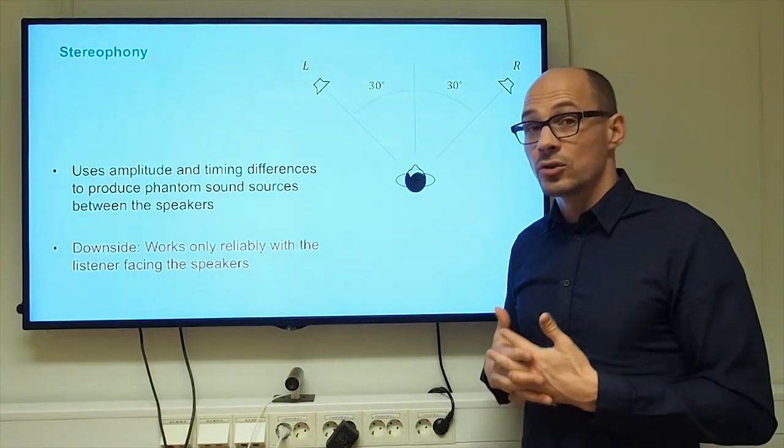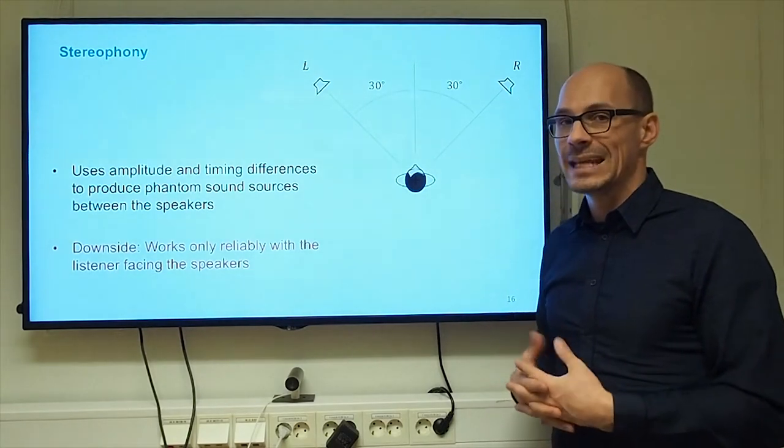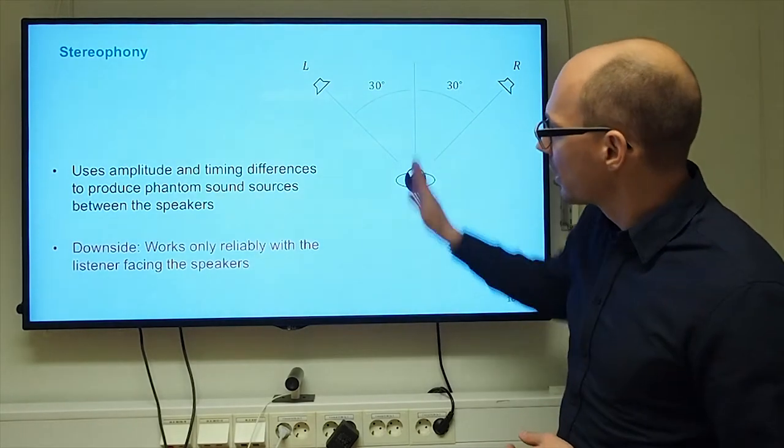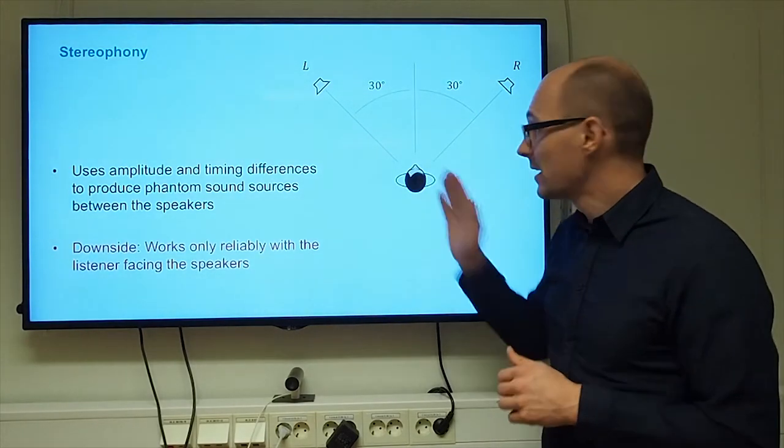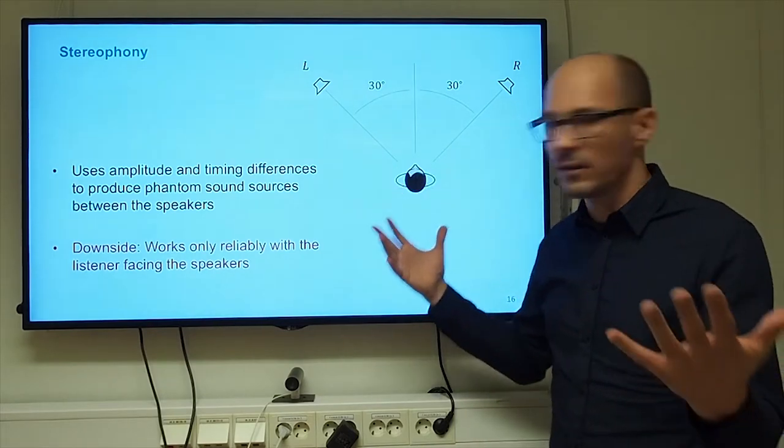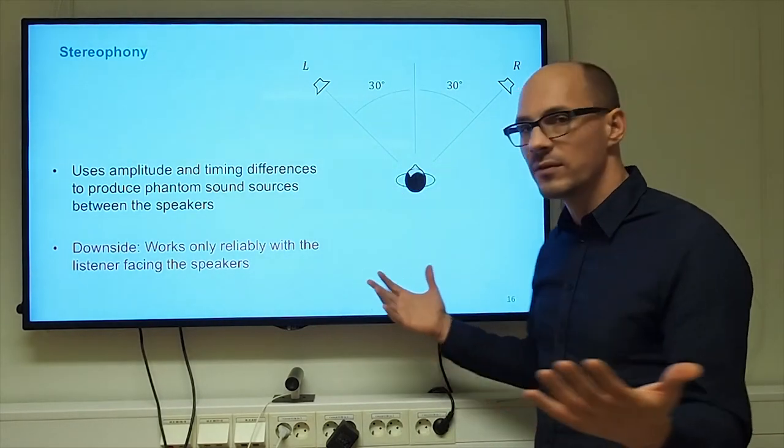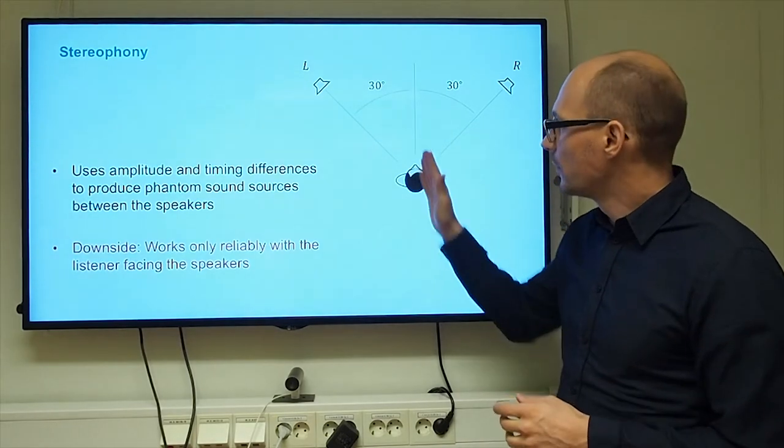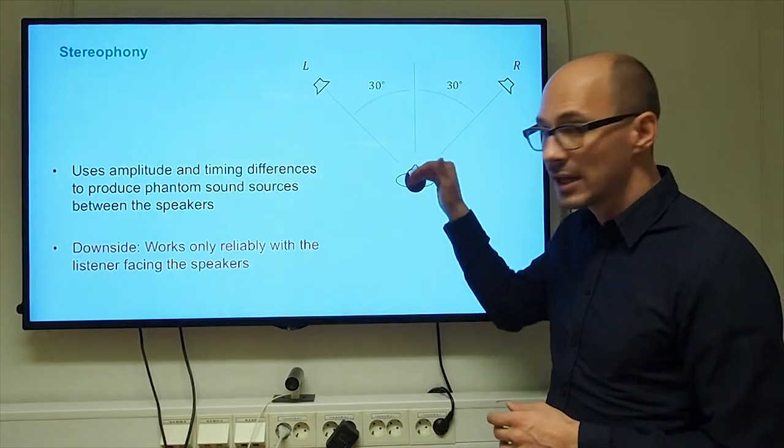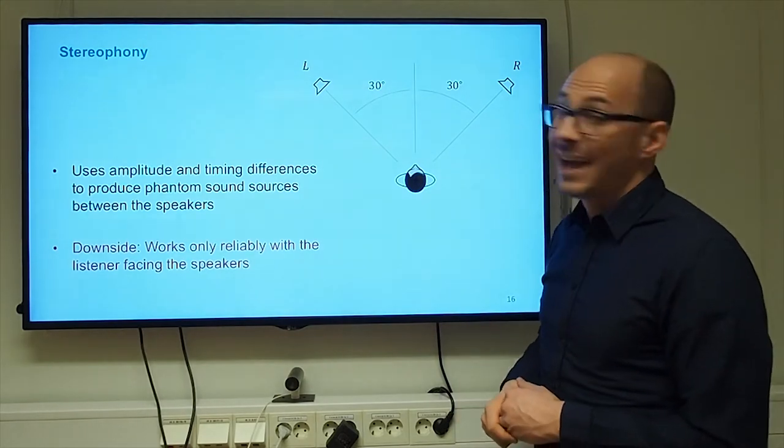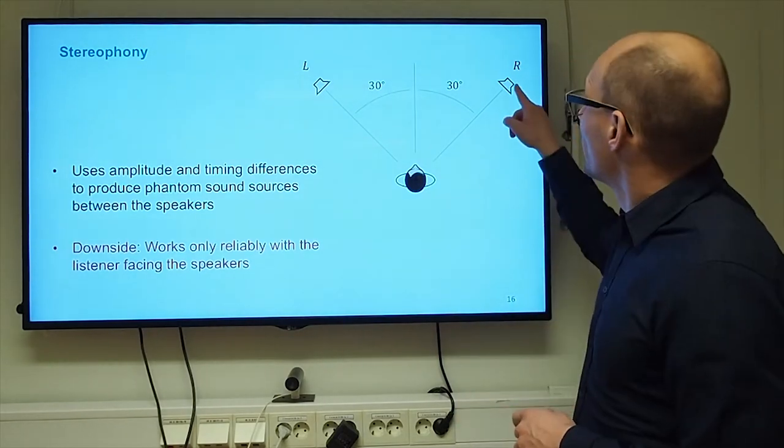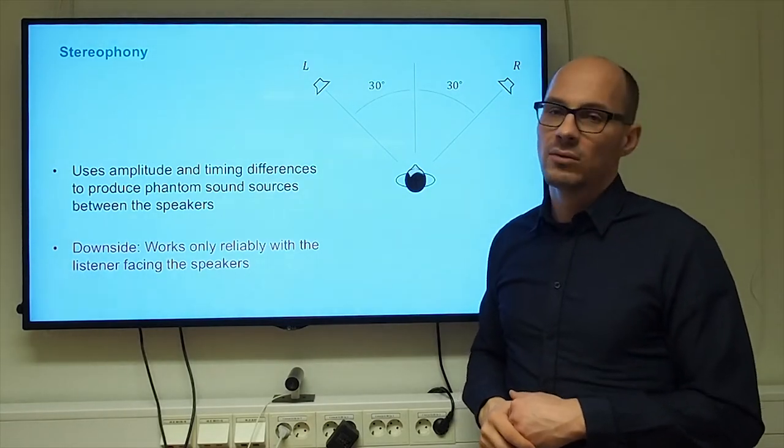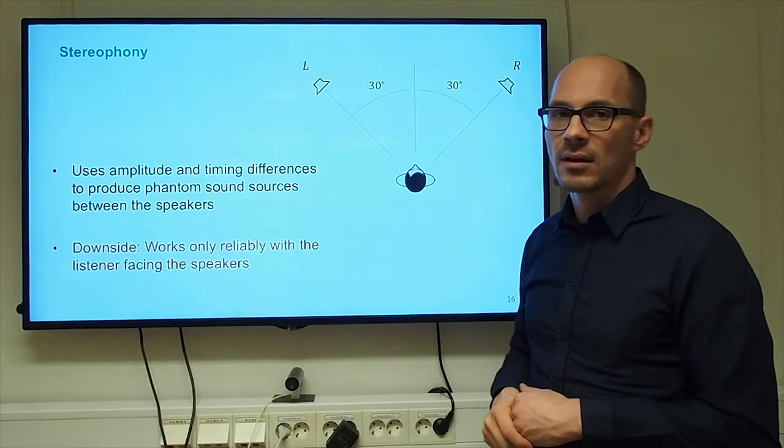One also speaks of amplitude or delay panning in this case. But the downside is that it works only reliably with the listener facing the two loudspeakers. So if you allow the user to move freely, it doesn't work as well if the user rotates or moves away from the symmetry plane. And another downside is also that you can only render phantom source angles between the two loudspeakers. So you can't render anything on the side.